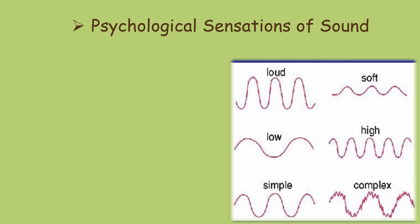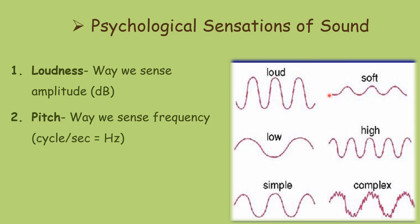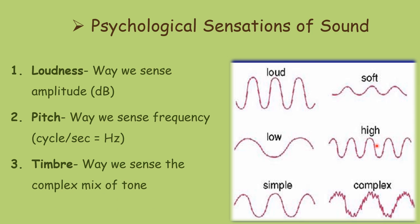Psychological sensations of sound. Loudness is the way we sense the amplitude; it is measured in decibels. So this is a louder sound and this is a softer sound — it is the way we sense the amplitude of the sound. Pitch is the way we sense the frequency: this is low frequency, this is high frequency — low pitch and high pitch — measured in Hertz. Timber is the way we sense the complex mix of tone; it is the complexity by which we make the sound.